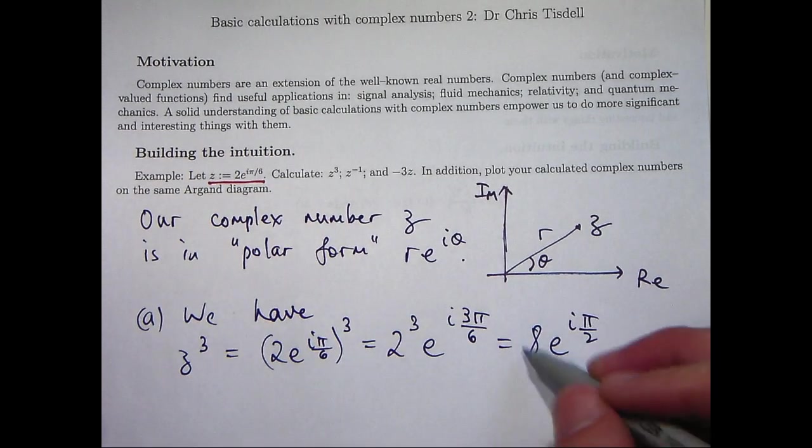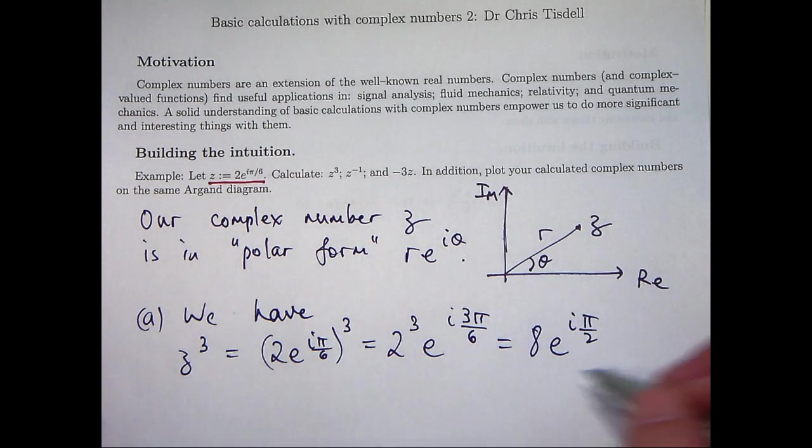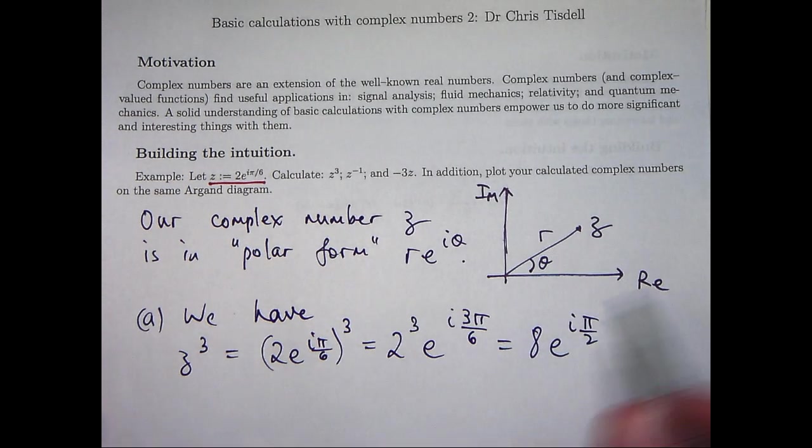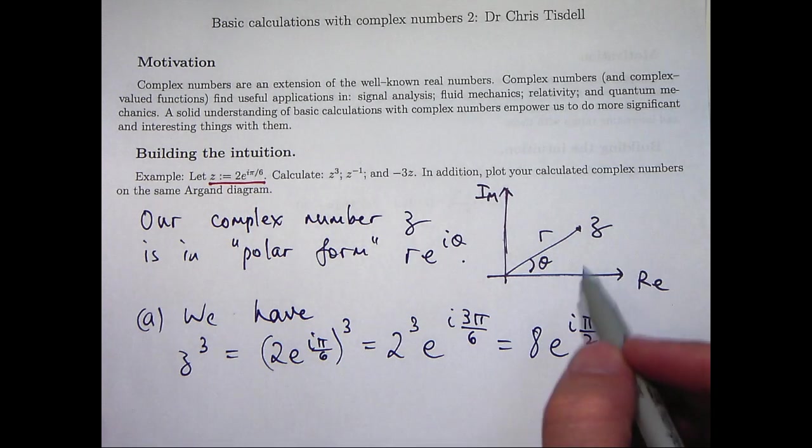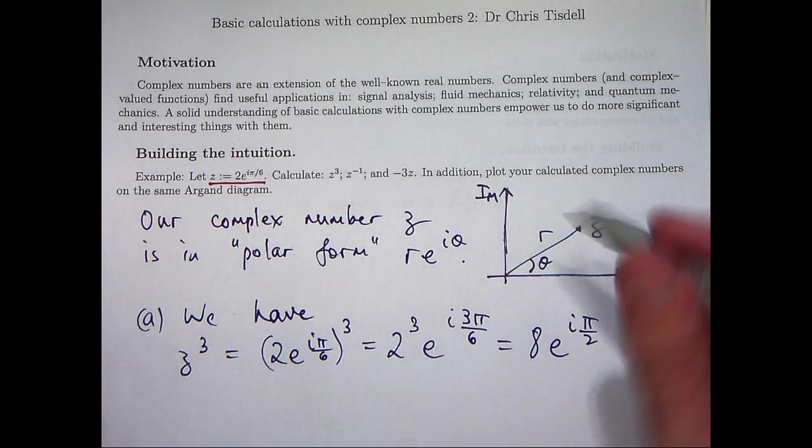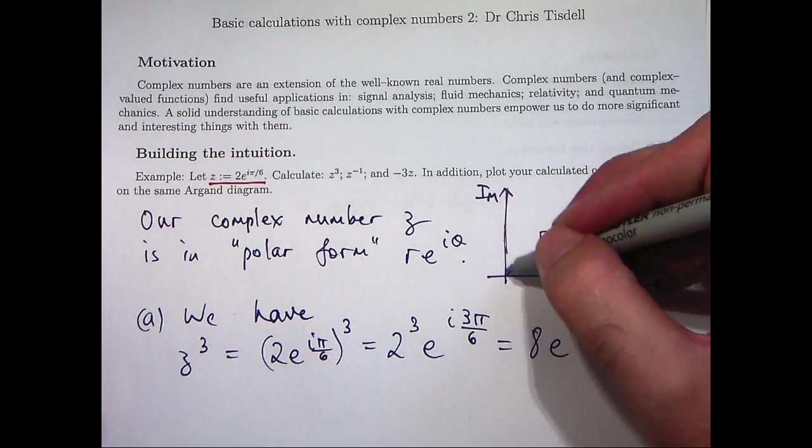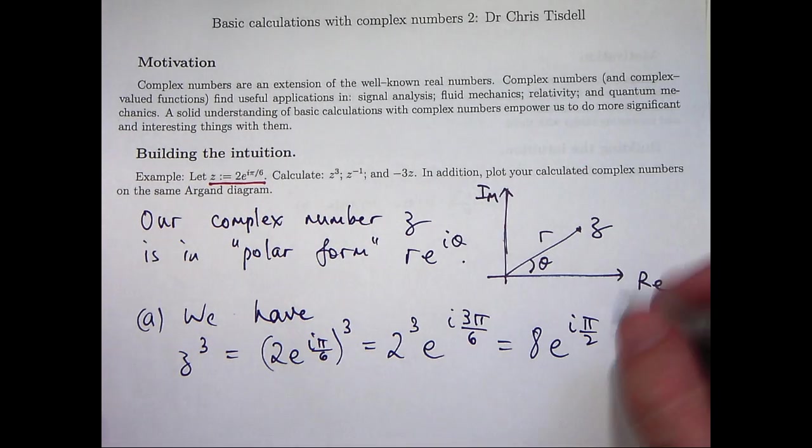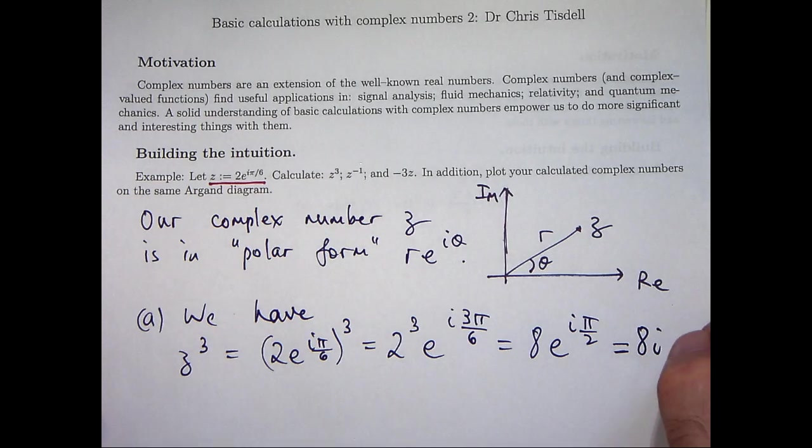Now, it turns out that I can actually simplify that a bit more. Think of going out 8 units from the origin and rotating π/2 units. Then I just lie along the imaginary axis. So I can actually simplify this down to 8i.